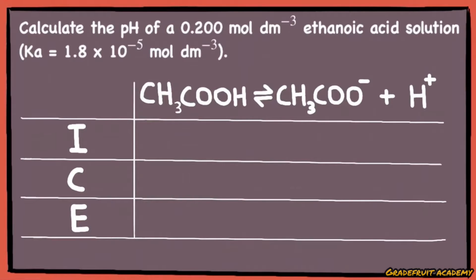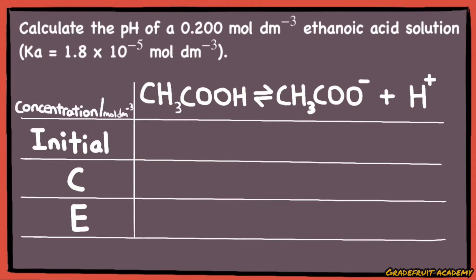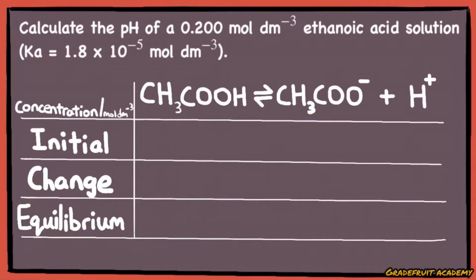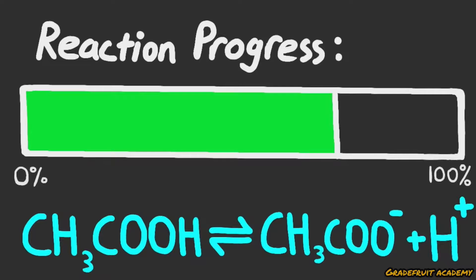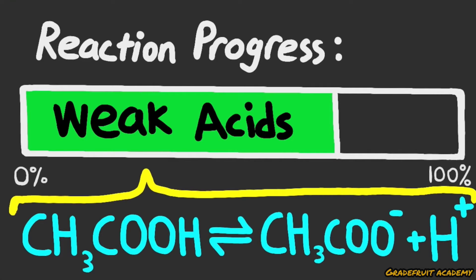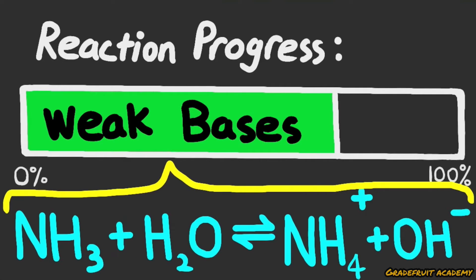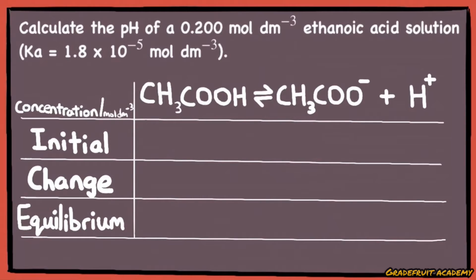pH is calculated using the ICE table, where ICE stands for Initial concentration, Change, and Equilibrium. We need to use the ICE table because weak acids and bases only ionize partially in water. Hence, we need to find the actual amount of hydrogen or hydroxide ions ionized at equilibrium.